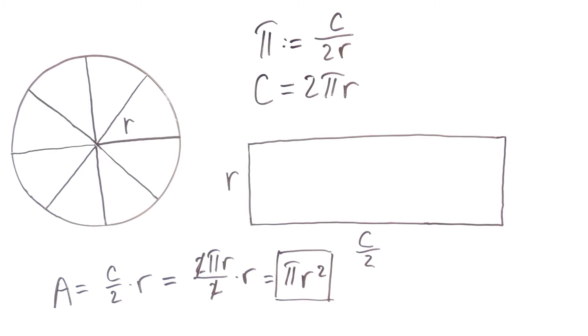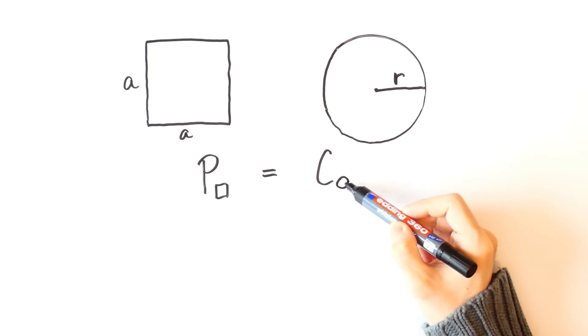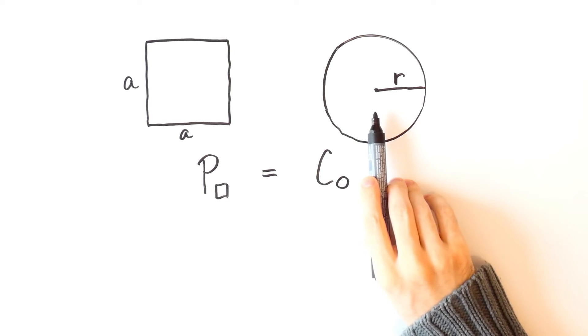Now we'll show an example where we'll use this formula. Suppose that the perimeter of a square is equal to the circumference of a circle. So, which one has greater area, the square or the circle?